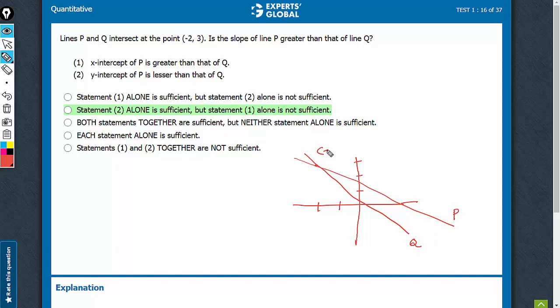They are intersecting at a point. Is the slope of line p greater than that of line q? Yeah, p is falling less sharply, and therefore we can say that the slope of p is greater than that of q. Both are negative, but p is a less negative slope. So we have got yes using this example. Now let's take another example.